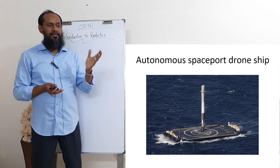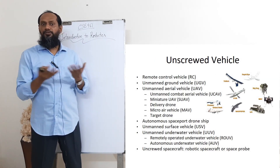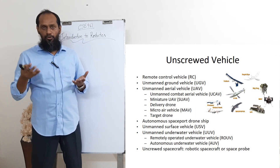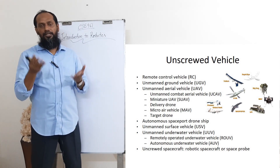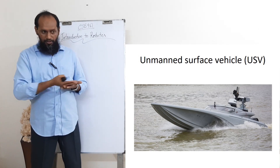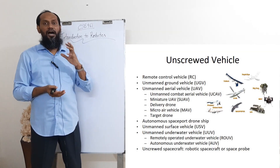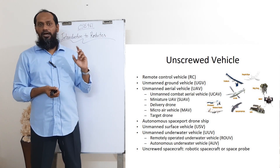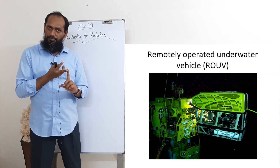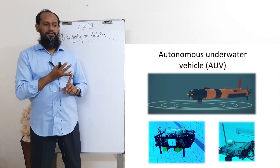Unmanned surface vehicle is actually surface meaning water surface. So the robot or unmanned vehicle that is used on the surface of water. And then unmanned underwater vehicle — which can be remotely operated or can be autonomous.